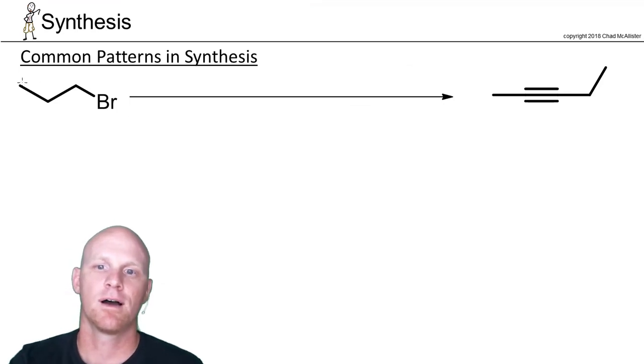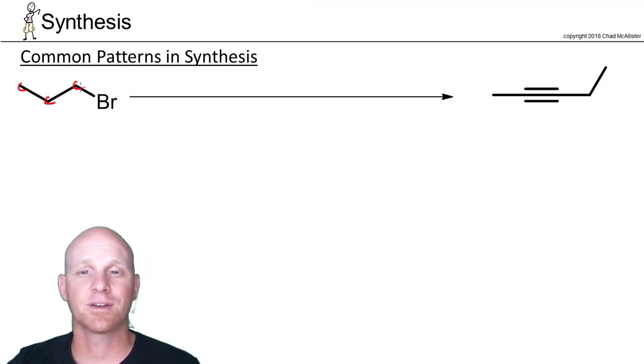Alright, in this example, it's the first example to see where the carbon skeleton does not match from reactant to product. We've got three carbons in the reactant, but we've got one, two, three, four, five in the product.